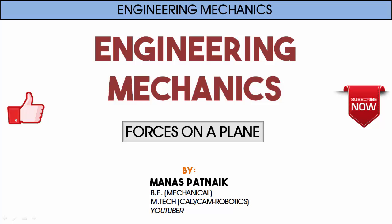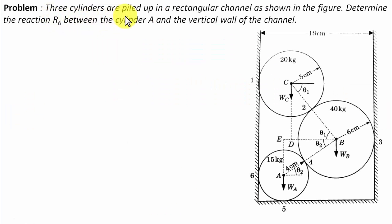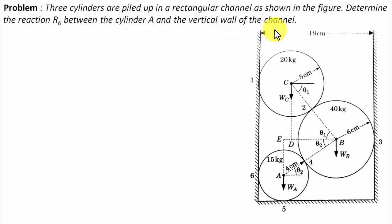Hi there guys, hope you're doing well. This is your friend and tutor Manus. Let's see what this problem has in store. Three cylinders are piled up in a rectangular channel as shown in the figure. Determine the reaction R6 between cylinder A and the vertical wall of the channel.